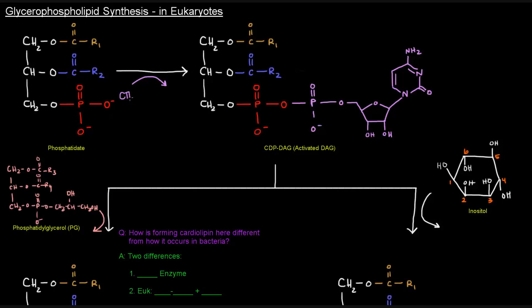Add to it some CTP, and then the CMP portion from that gets added on to phosphatidate while a pyrophosphate comes off. We get our activated diacylglycerol in CDPDAG. Now this is activated, ready to go for the addition of polar head group alcohols to be attached to this red phosphate group here and knock this CMP off.